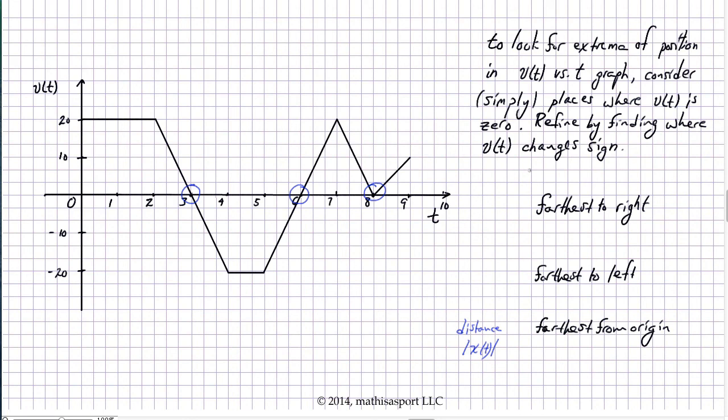So, I'm going to write that out, what we've just learned. So, to look for extrema in a v versus t graph, if you're looking for extrema of position, the simplest way to look is to look for places where v equals zero. But not all of those places will actually count. You can rule out candidates where the velocity doesn't actually change sign.